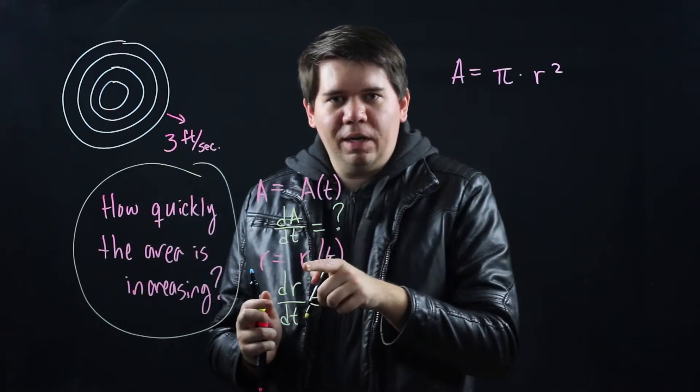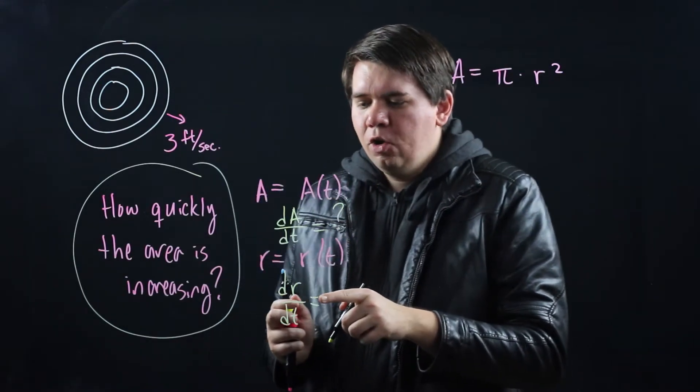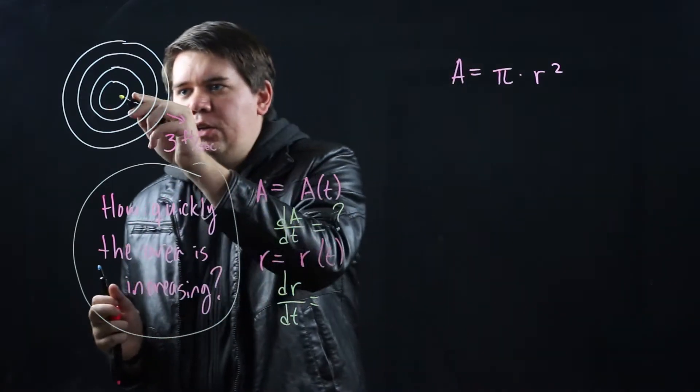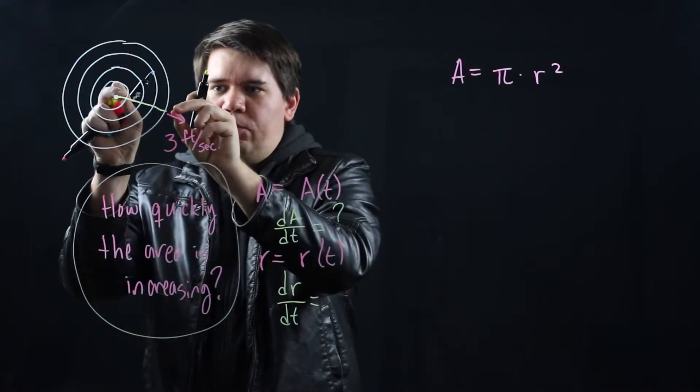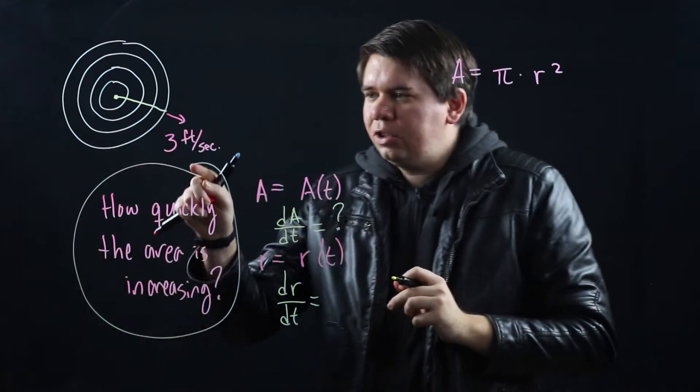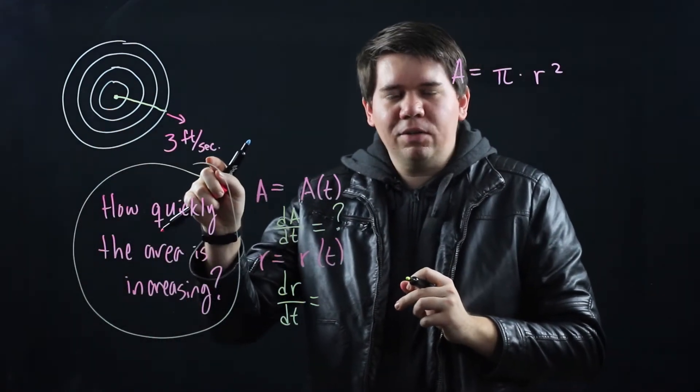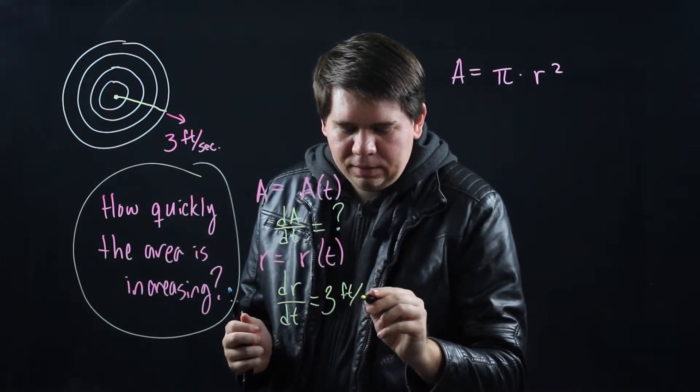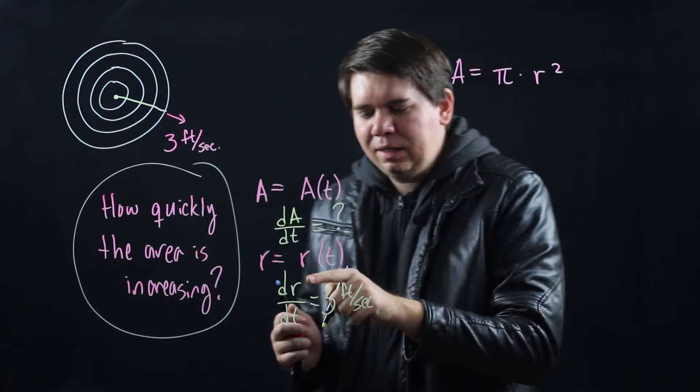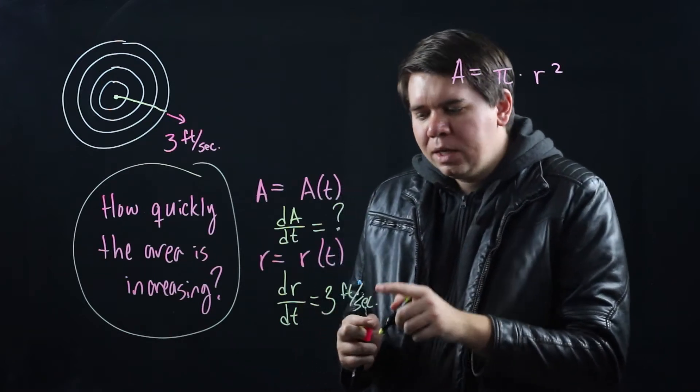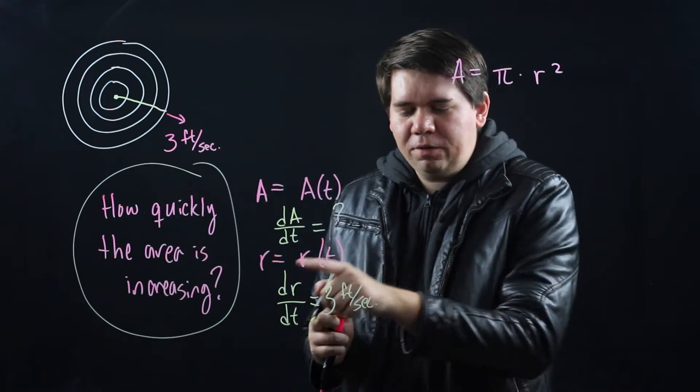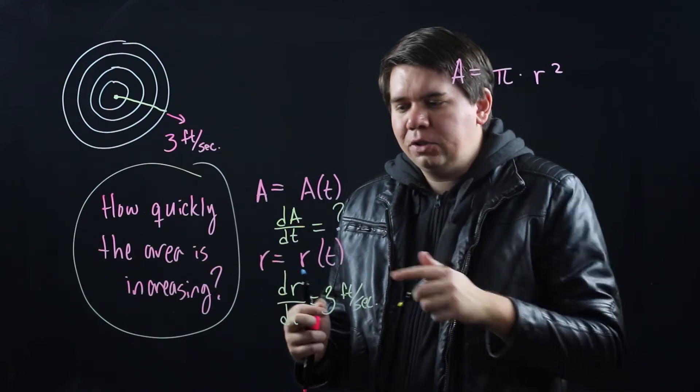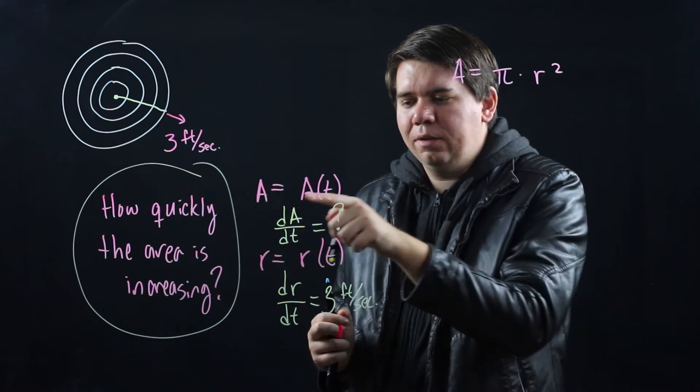How about the derivative of the radius with respect to time? Well that will tell you how quickly the radius is expanding. If you think you have some radius here of the circle, you know how quickly it's expanding. Well that's just the 3 feet per second that was given to us at the beginning of the problem. Here 3 feet per second is exactly the rate of change of the radius. So somehow we want to use this information about this rate of change, the rate of change of the radius, to figure out some information about the rate of change of the area.